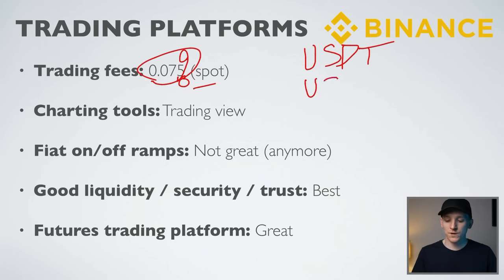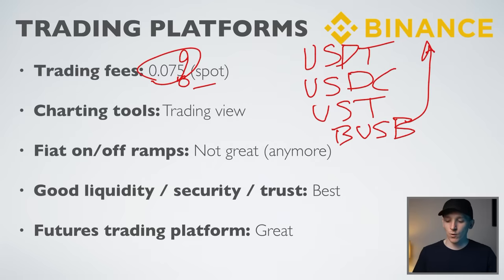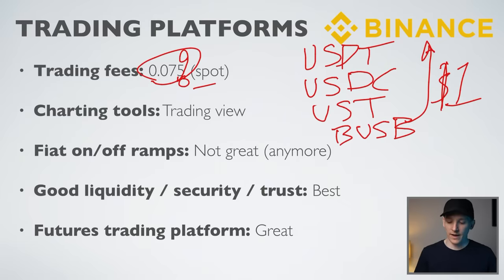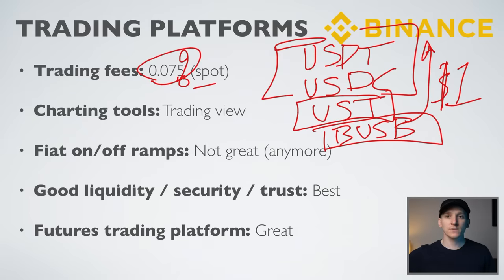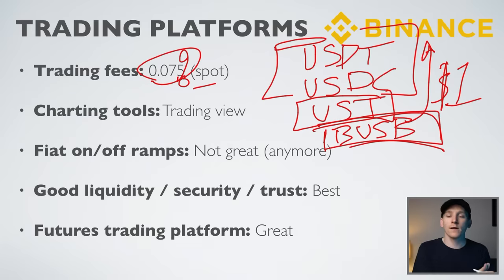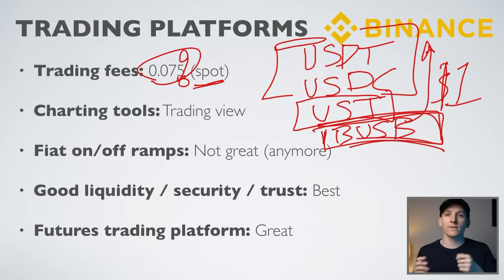USDT is a stablecoin. You also have USDC, UST, and BUSD — Binance's stablecoin. All of these have a value of one dollar; they are cryptocurrencies that track the dollar. Essentially, you take your fiat currency — dollars, pounds, whatever — put it into a stablecoin, and then trade that against Bitcoin or Ethereum in the spot market. If you want to buy $1,000 of Bitcoin, you need $1,000 worth of stablecoin, and you own the cryptocurrency and can withdraw it.